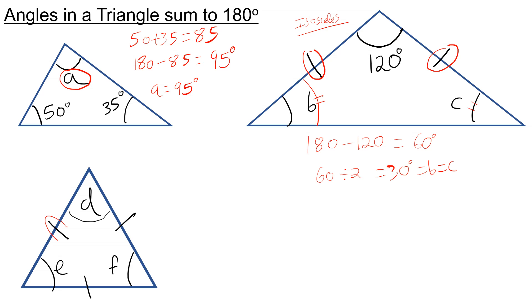Finally, we have an equilateral triangle, because all three sides are the same. This means that all of the angles inside are the same too. So we know that D, E, and F add up to 180 and they're all equal. To work out one of them, I just need to divide 180 by 3, which is 60 degrees. So D, E, and F are all 60 degrees.